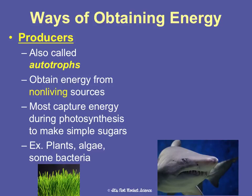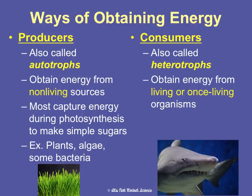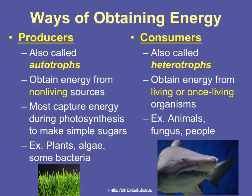Another way of obtaining energy is like humans — you can be a consumer, also known as a heterotroph. Hetero meaning other and troph meaning nourish, so other nourishment is where we get our energy. We obtain energy from living things or once-living things. When you eat a hamburger, that was a once-living cow — it's not non-living because it was once alive. Examples of consumers are animals, fungus, and people.